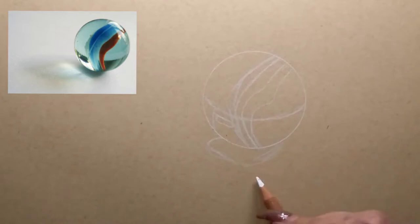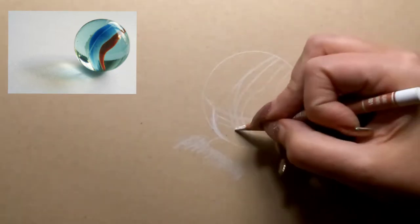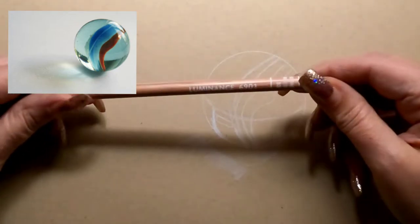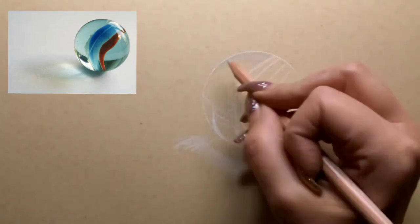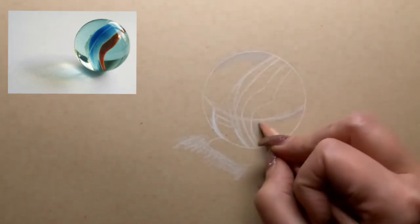Now I'm going in with my white color pencil and I'm just sketching in where my basic outlines are so that we can go in and start filling in with all of our colors.